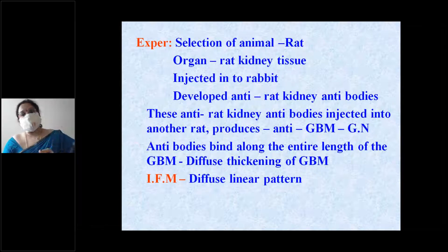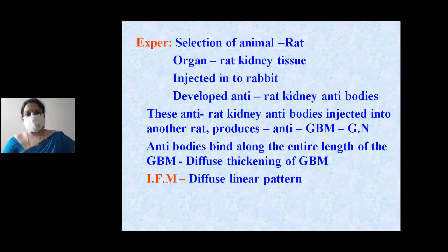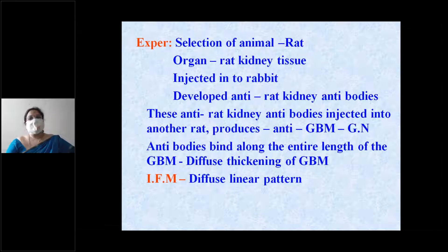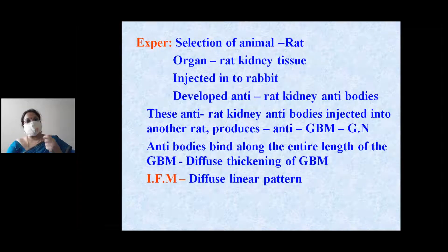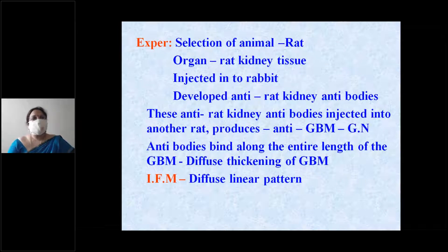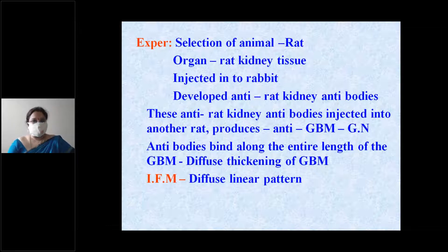In the second rat, antibodies were produced against the anti-rat kidney immunoglobulin, causing anti-GBM glomerulonephritis. These antibodies bound along the entire length of the glomerular basement membrane, leading to diffuse thickening of the glomeruli.